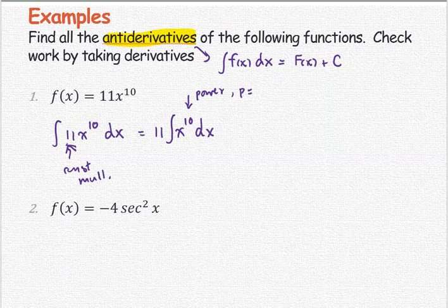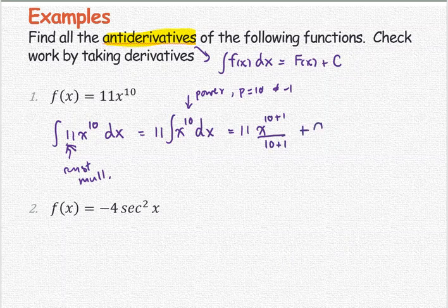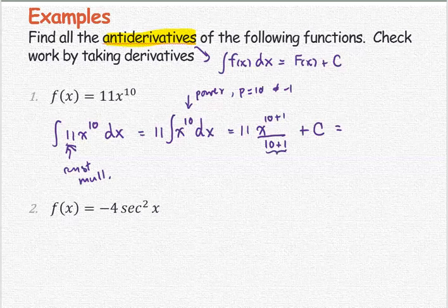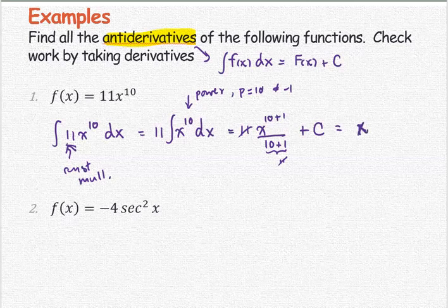The power p is 10, not equal to negative 1, so the antiderivative of x to the power p is x to the power p+1 divided by p+1, plus C. Since 10 plus 1 is 11, the 11 and 11 cancel, and we get x to the power 11 plus C as all antiderivatives.